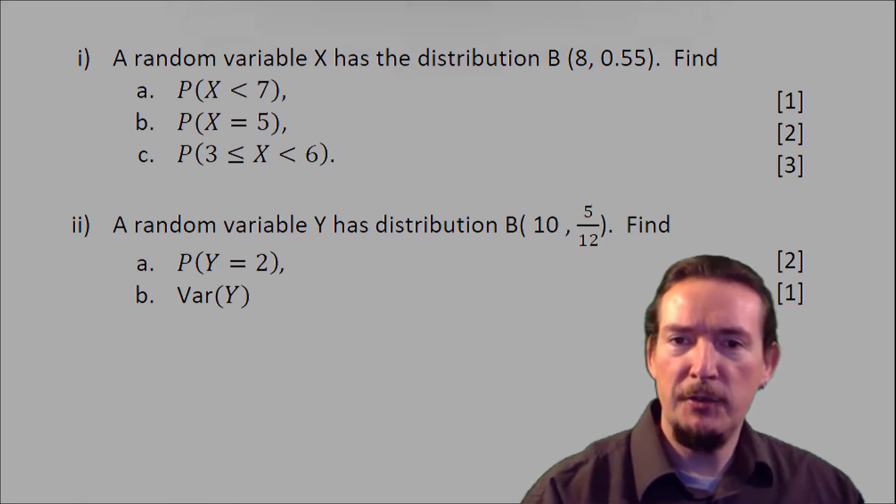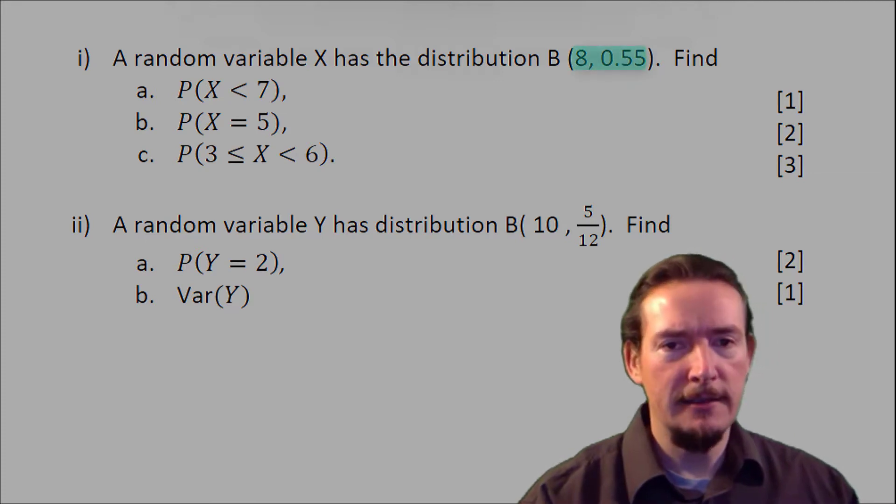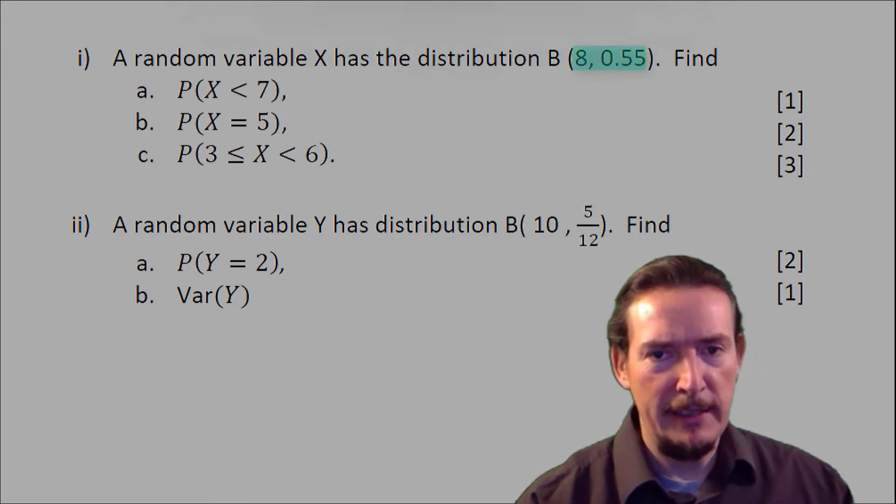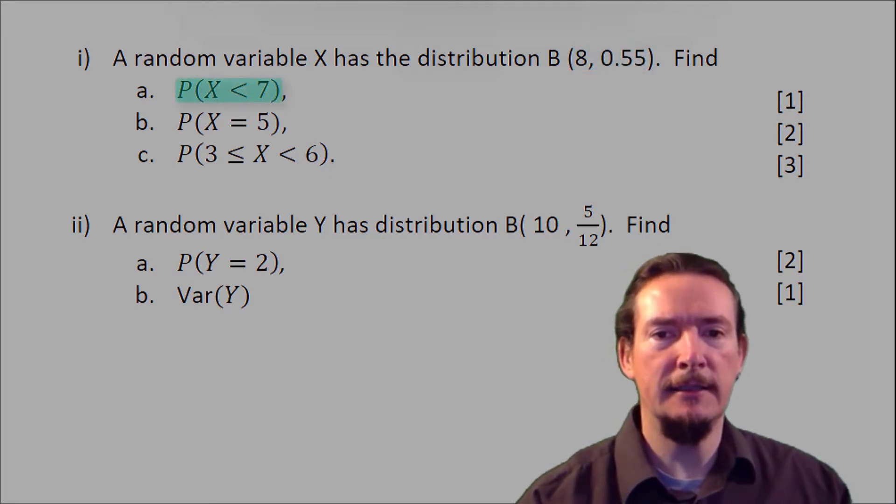The parameters for this distribution in Part 1 are the number of trials N is equal to 8, the probability of success P equals 0.55, and Part A asks us to find the probability that x is less than 7.